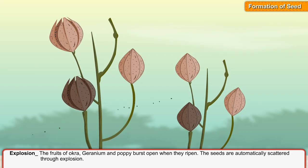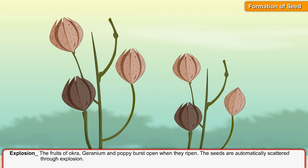The fruits of okra, geranium and poppy burst open when they ripen. The seeds are automatically scattered through explosion.